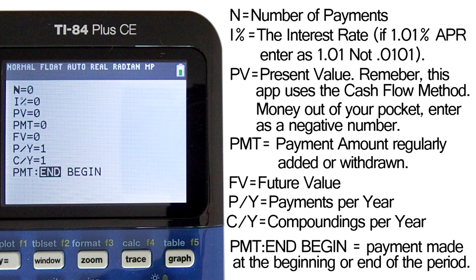PV is present value. This app uses the cash flow method. Thus, if money is leaving your pocket to fund an account then enter the money leaving your pocket as a negative number. Remember to use the negative sign and not the minus key when inputting this value. If you use the minus key you will get an error message.